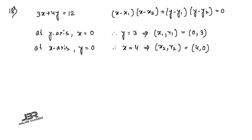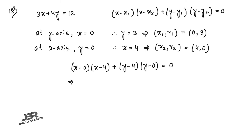Substituting into the diameter-form equation: (x − 0)(x − 4) + (y − 3)(y − 0) = 0, which gives x² − 4x + y² − 3y = 0. So the required equation is x² + y² − 4x − 3y = 0.